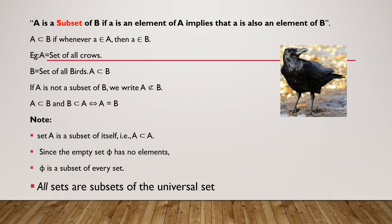Next is the definition of subset. A set is a subset of another set if every element of the first set is also an element of the other set. For example, if we take set A as the set of all crows and set B as the set of all birds, then A is a subset of B, because all crows are birds. Key points: every set is a subset of itself, the empty set Φ is a subset of every set, and all sets are subsets of the universal set.